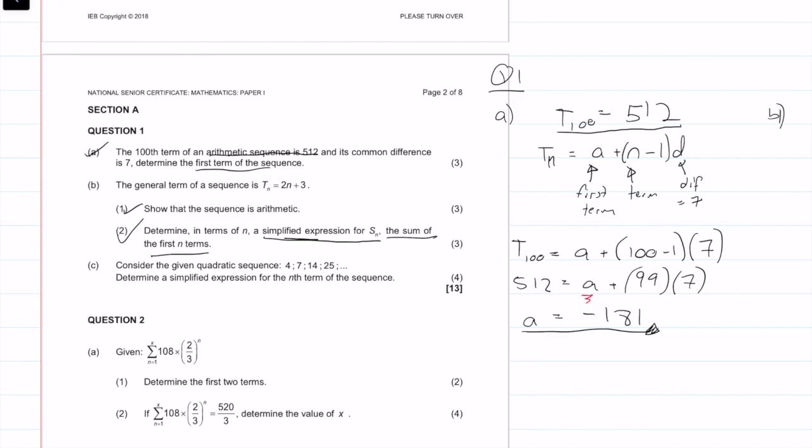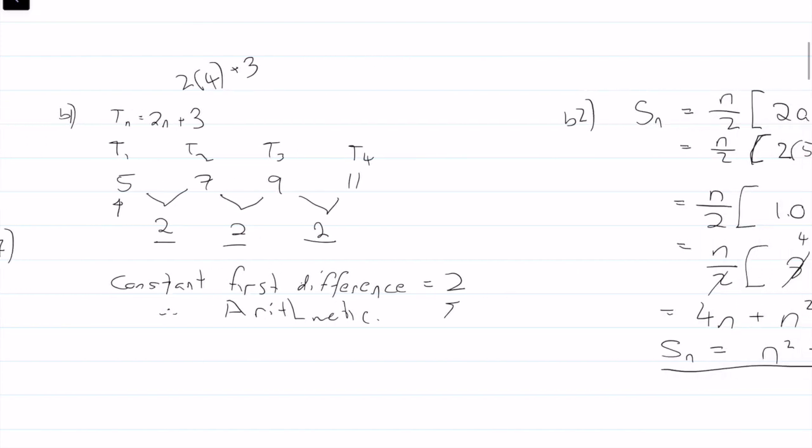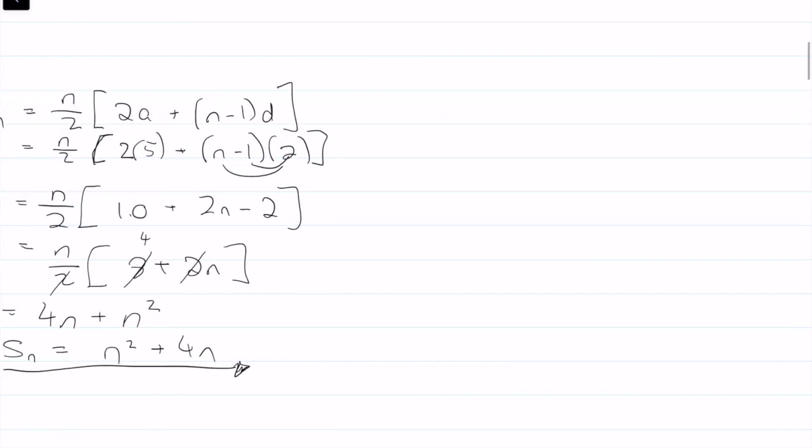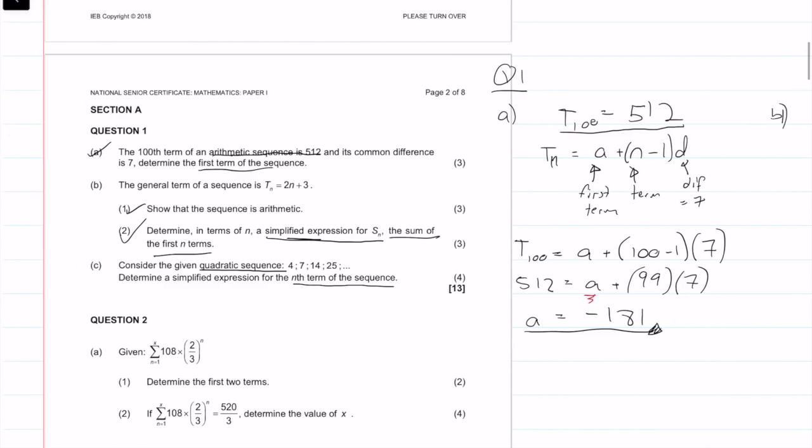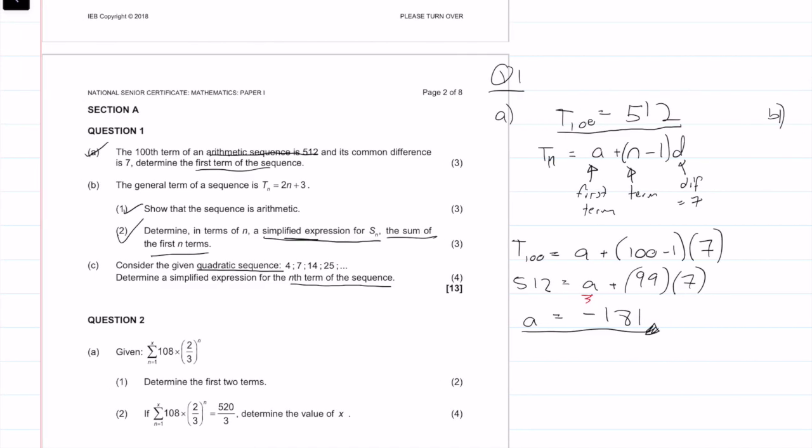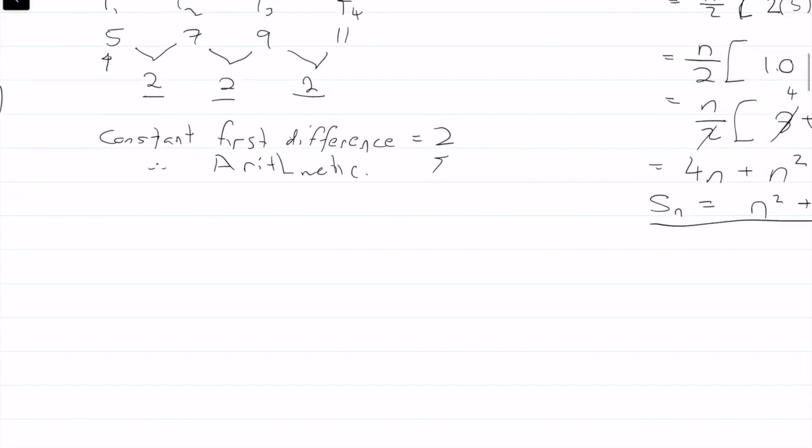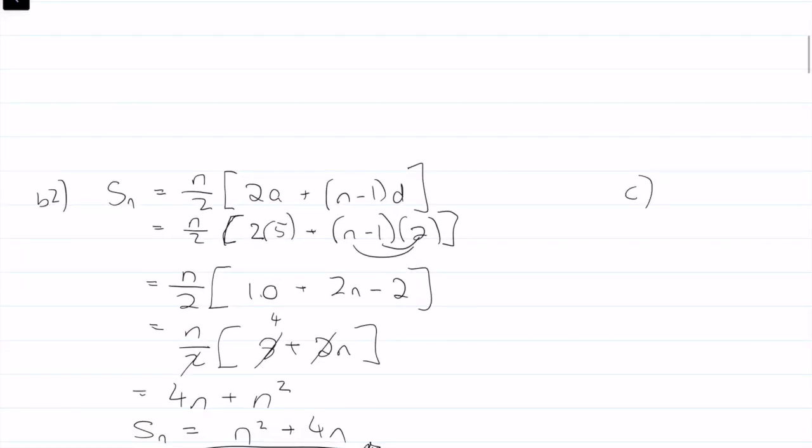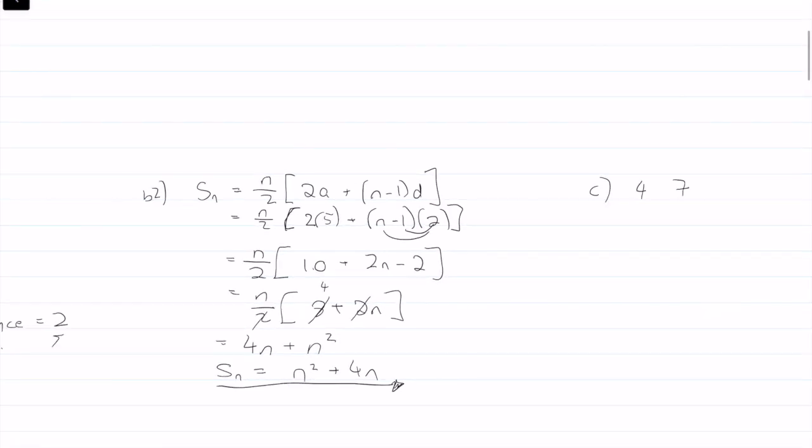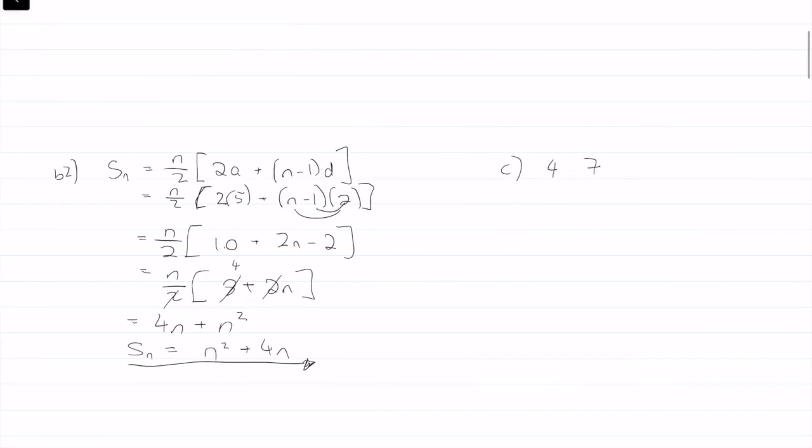And then the last question says, consider the given quadratic sequence. Determine a simplified expression for the nth term of the sequence. Quadratic sequence. So for quadratic sequences, we need to remember some things. What we need to remember, I will put in a different color. This is question C, and I'm just going to put the sequence down. It's 4, 7, 14, and 25.